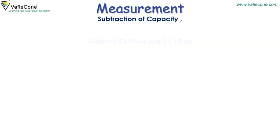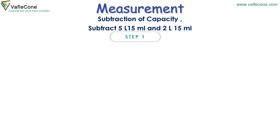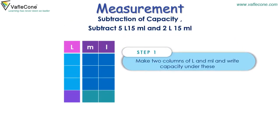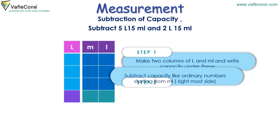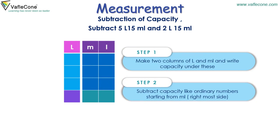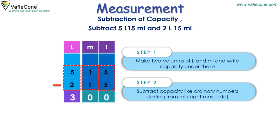Subtraction of capacity. Subtract 5 liters 15 milliliters and 2 liters 15 milliliters. Step 1: Make two columns of liter and milliliter and write the capacity under these. Step 2: Subtract capacity like ordinary numbers starting from milliliters. Place values in their columns. 5 minus 5 is equal to 0, then 1 minus 1 is equal to 0. In the liter column, 5 minus 2 is equal to 3 liters. So the answer is 3 liters.